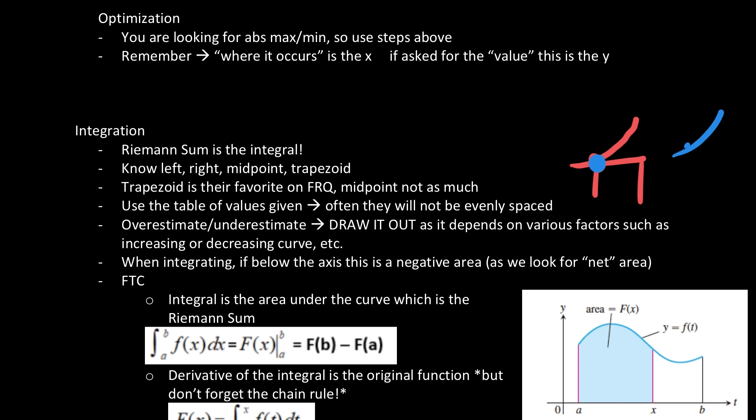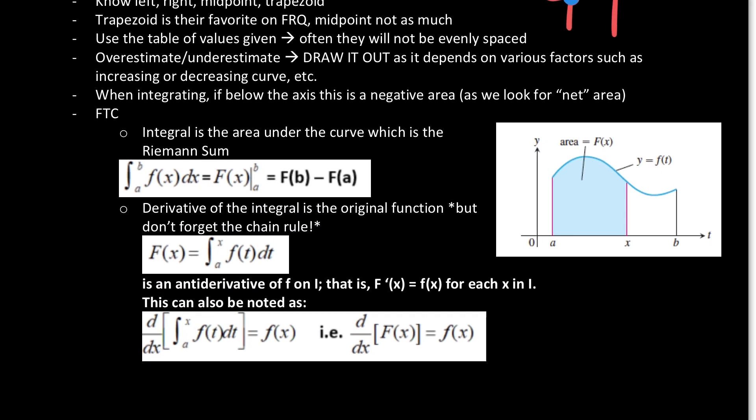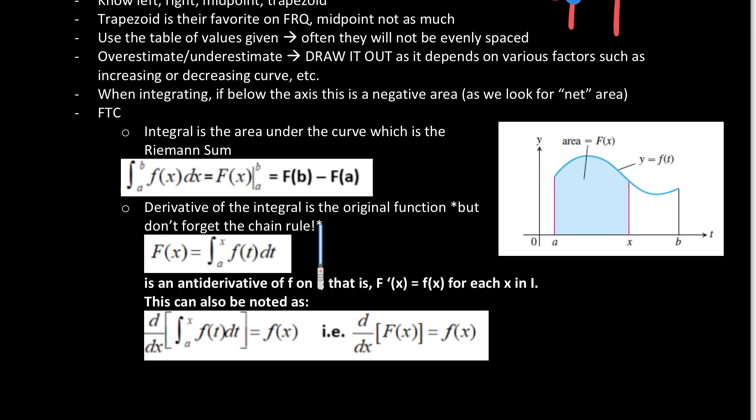As far as FTC, remember there's two parts of FTC. One part says the integral is the area under the curve. So if we have a curve, we are looking for this integral under the area, and that would be the integral from A to B of F(x) dx equals, now this is the integral, we get the capital function F, which is the antiderivative from A to B, so that would be F(B) minus F(A). Next up, remember the second part, the derivative of the integral is the original function, but don't forget to take the chain rule into account. So if we take the derivative of this, we end up with the original function, but with a chain rule involved. Remember, A is the dummy variable. X is what you will need to do the chain rule on.